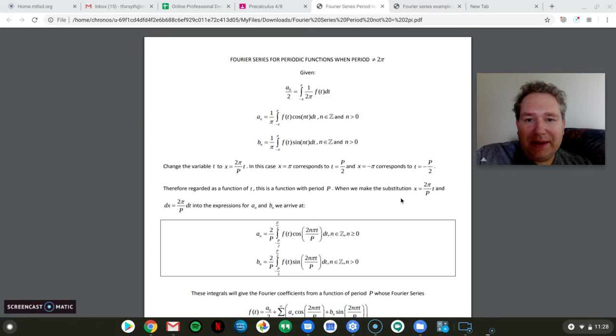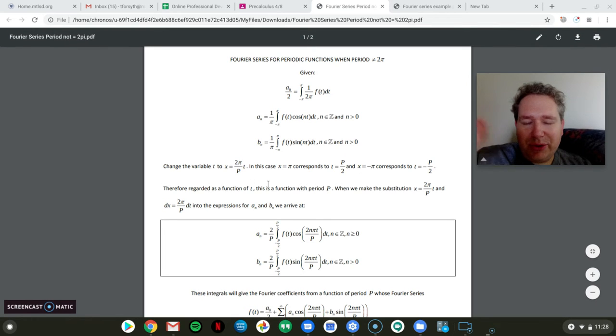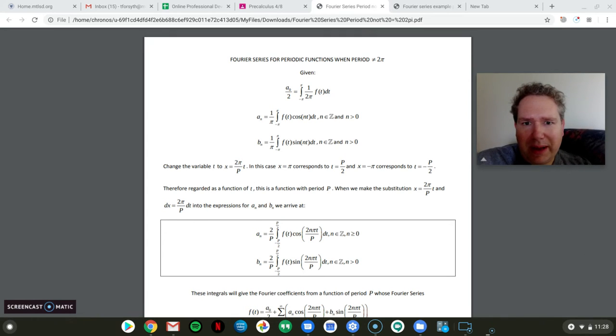And then all you have to do is substitute that substitution as well as dx equals 2π over P dt into the Fourier series coefficients from above here, and you get these ones that are below. I'll clarify what I mean by this a little bit. I'll draw out just to make sure that you're clear about what that all means.